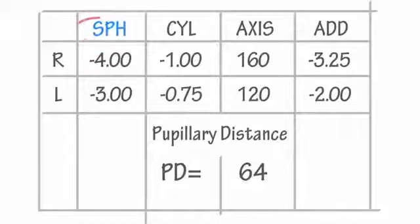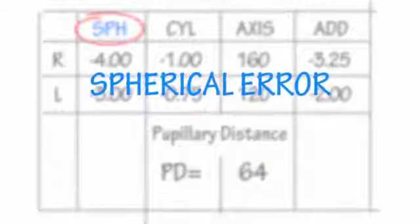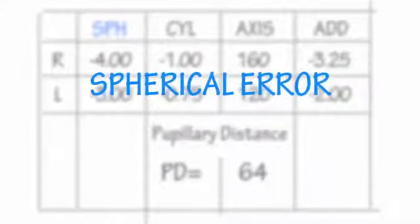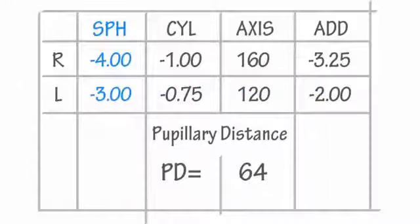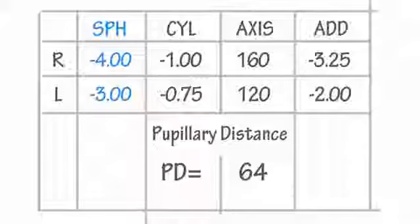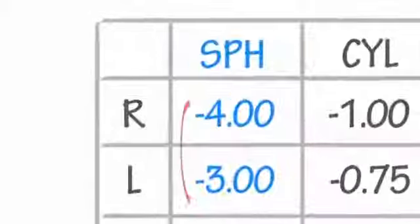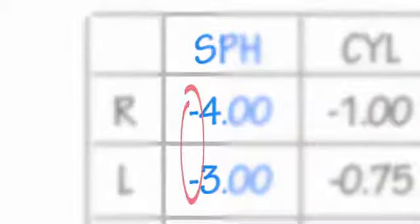Next we have SPH, which means spherical error. But don't be put off by the word error. All this simply means is how strong the lens needs to be to correct your vision. Below SPH, you'll see a plus sign or a negative sign followed by a number.